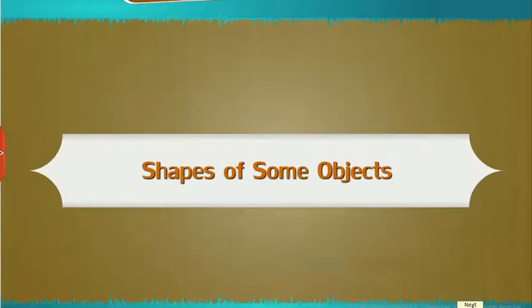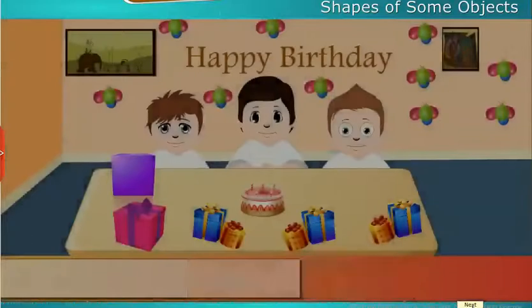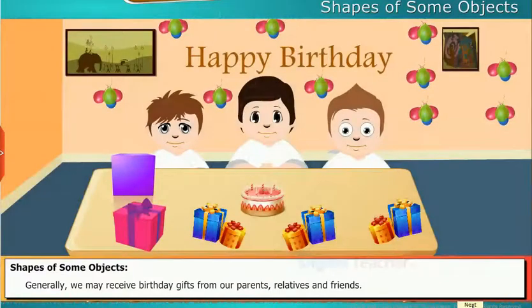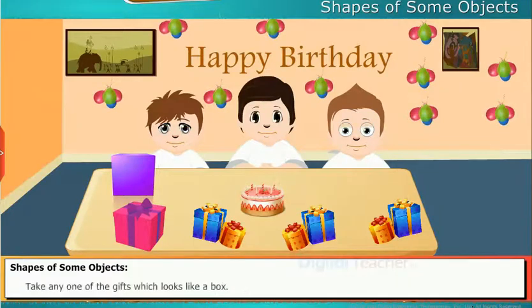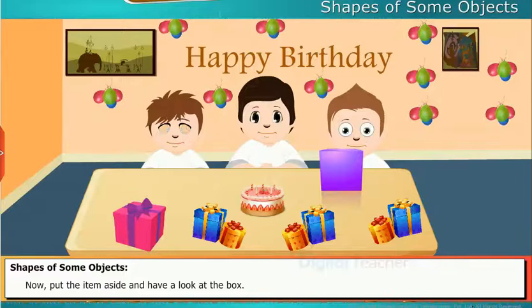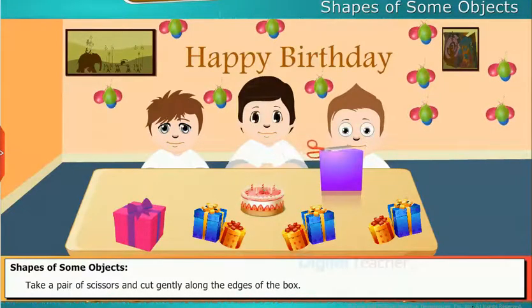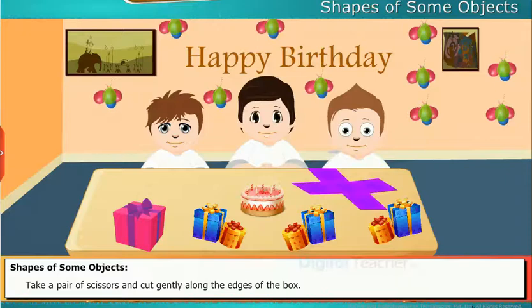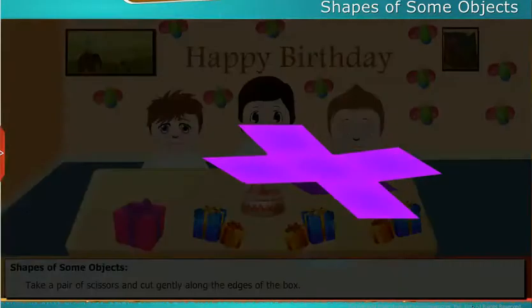Now we will discuss about the shapes of some more objects. Generally, we may receive birthday gifts from our parents, relatives, and friends. Take any one of the gifts which looks like a box. Put the item aside and have a look at the box. Take a pair of scissors and cut gently along the edges of the box. What we observe here is 5 squares. So from this we get to know that square-shaped boxes consist of 5 squares.